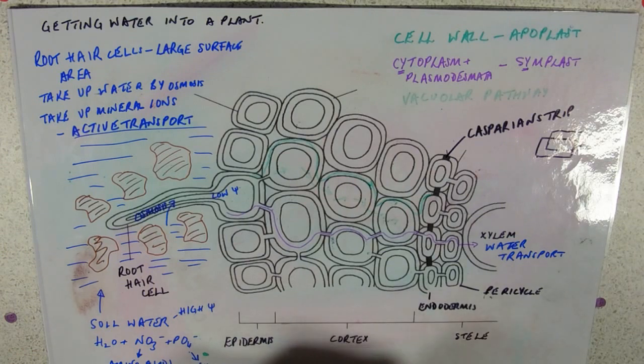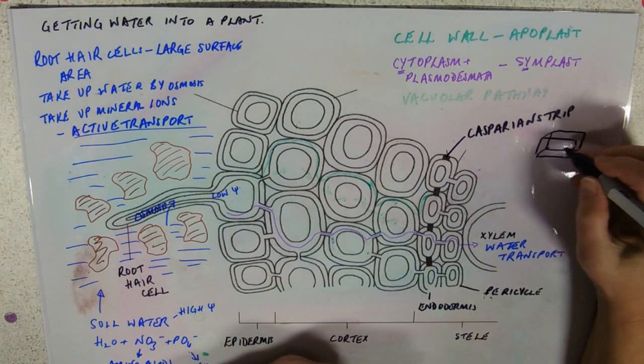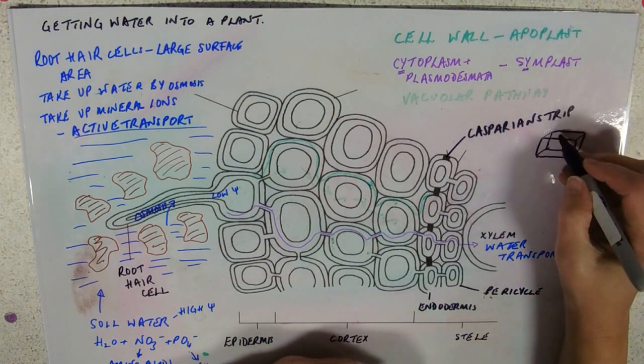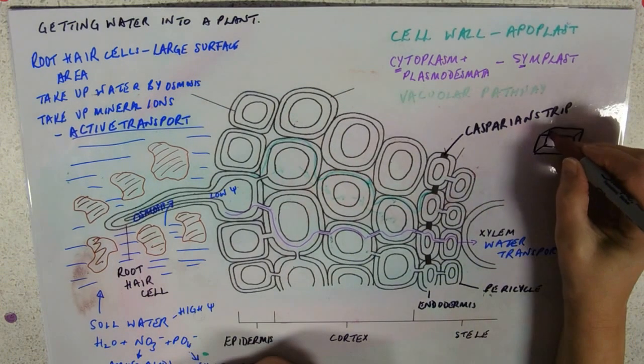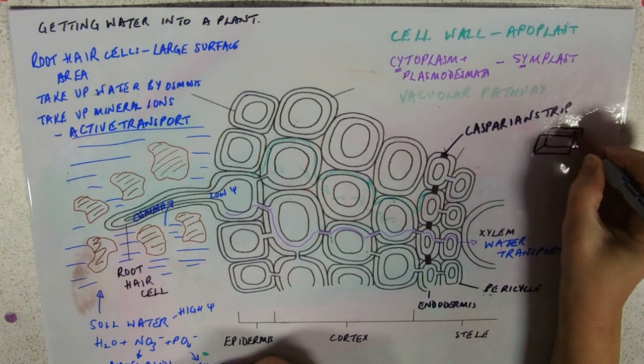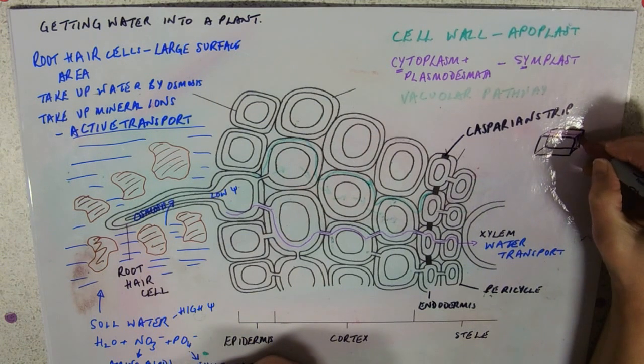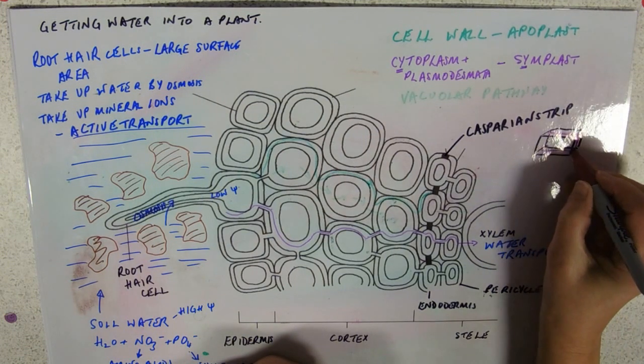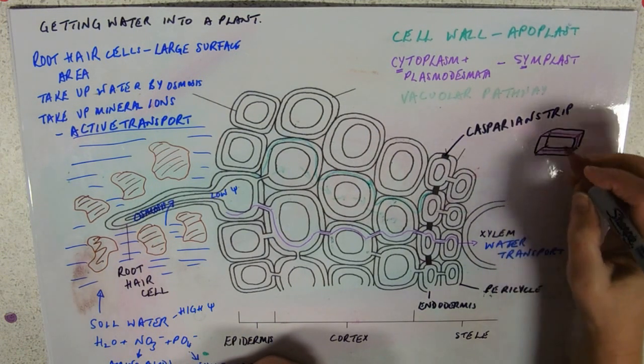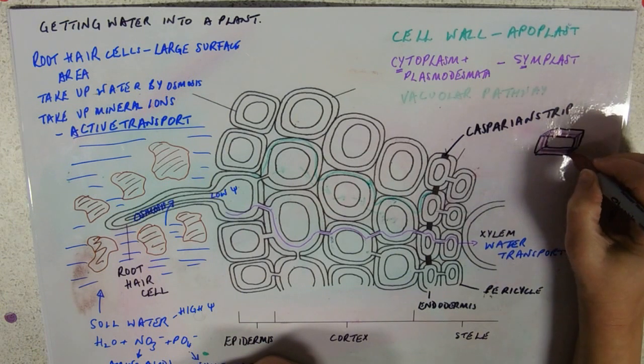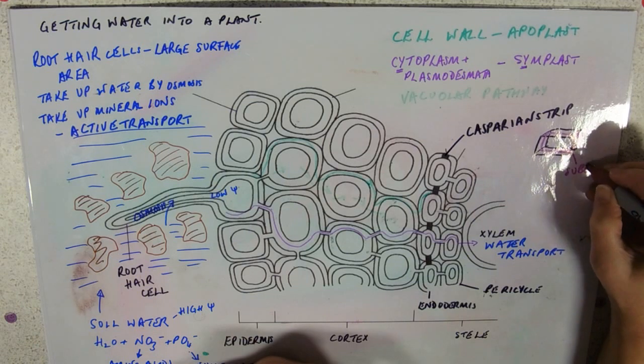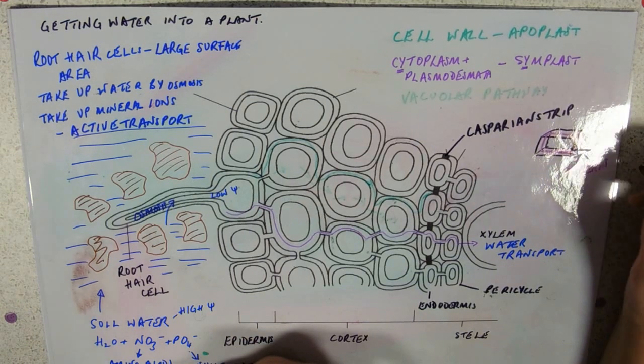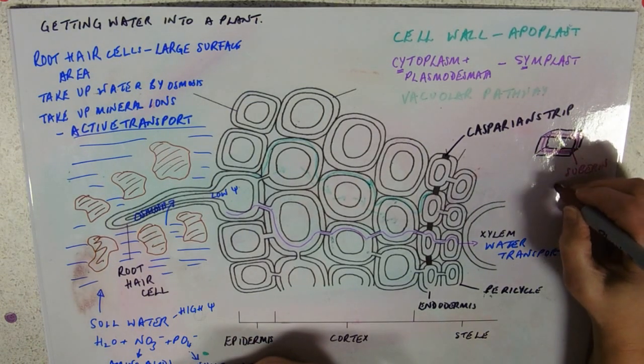So this is my 3D version. The Casparian strip is right the way through the cell wall. So it's embedded through, right the way through the cellulose. And it's made of suberin, which is like cork, and is waterproof.